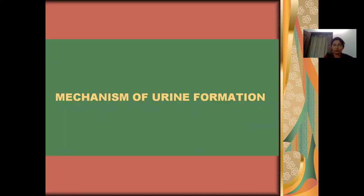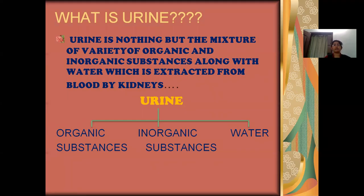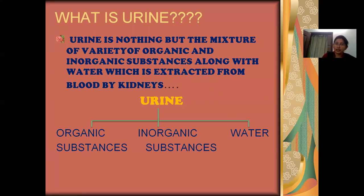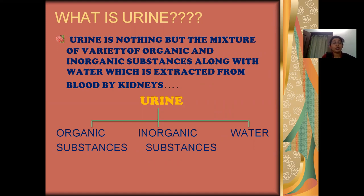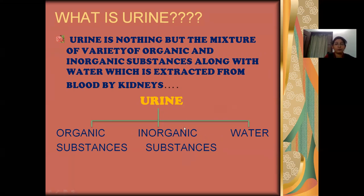So let's begin our session — Mechanism of Urine Formation. I will begin with the question: What is urine? From your early childhood, you are listening to the term urine. If I ask you what is urine, your answer will be urine is a liquid which is pale yellow in color. But if you see the composition, it is definitely a liquid — it has water — and along with water, some organic substances and some inorganic substances are present. These organic and inorganic substances combined with water are called urine.